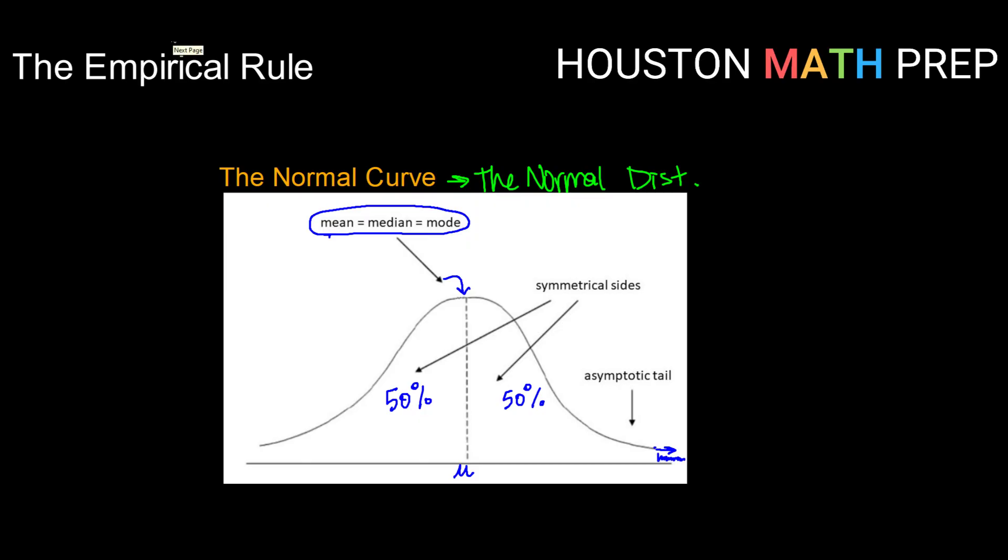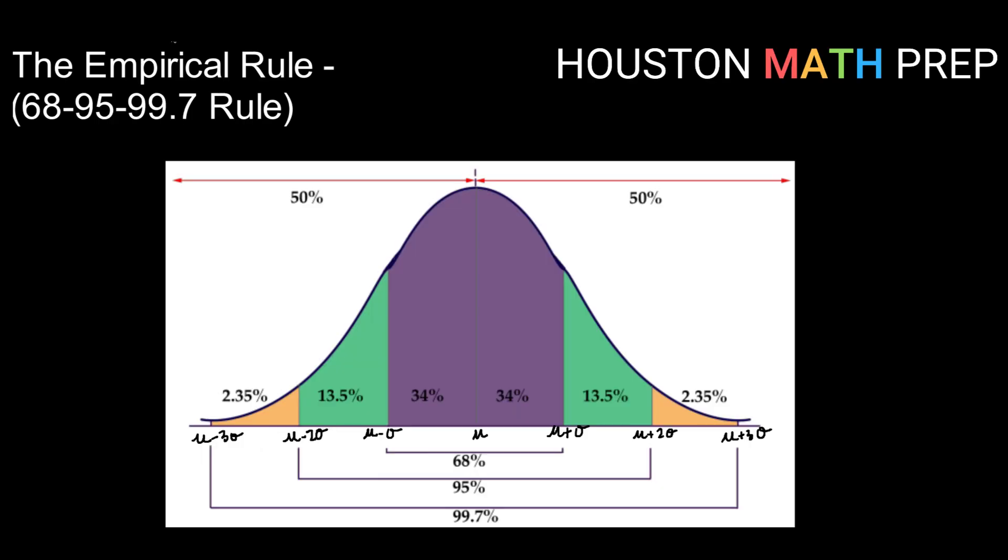Let's look at how the empirical rule ties into that. So the empirical rule, also known as the 68-95-99.7 rule, says that if we are working with a normal distribution or an approximately normal distribution,